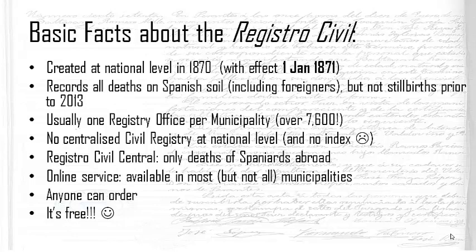There was a previous civil registry in Spain between 1841 and 1870, which was replaced by the current 1870–71 system. However, it only existed in certain large cities and is not universally available. We won't be covering it today, but it is something to bear in mind.